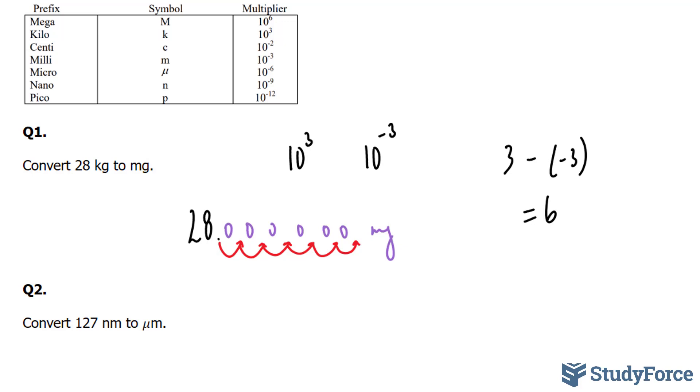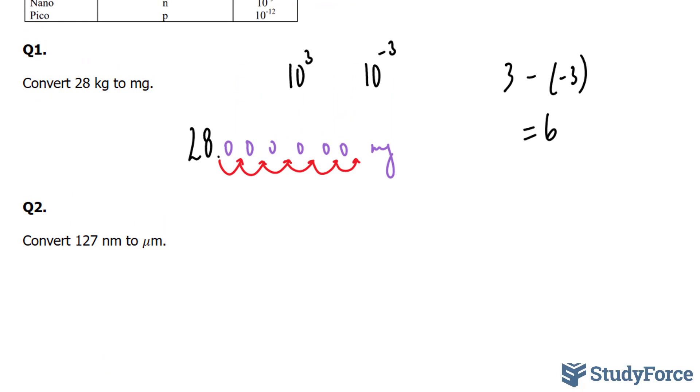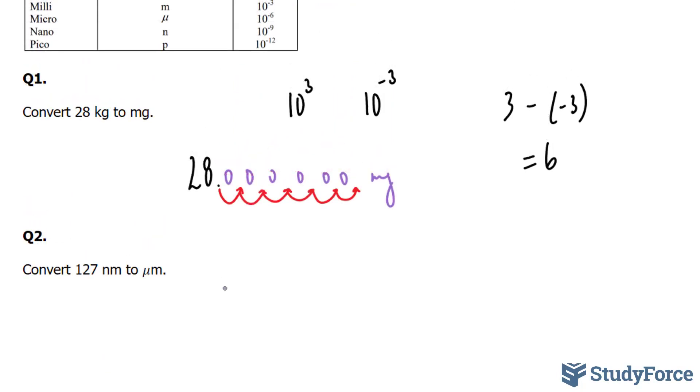Let's move on to question number 2. In question number 2, they are asking us to convert 127 nanometers to micrometers. Once again, we'll identify the multipliers for nanometers, and as shown in this table, 10 to the power of negative 9, and the multiplier for micrometers, as shown in this table, this symbol right here, is 10 to the power of negative 6.